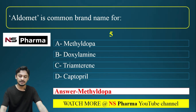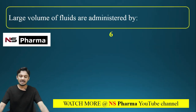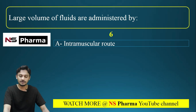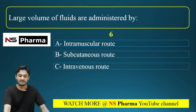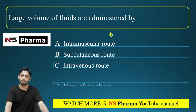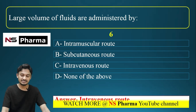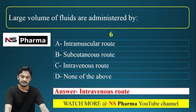Question number six: Large volume of fluids are administered by which of the following route? Option A, Intramuscular route; Option B, Subcutaneous route; Option C, Intravenous route; Option D, None of the above. The correct answer is Option C, intravenous route. Large volume parenterals are administered through the intravenous route.